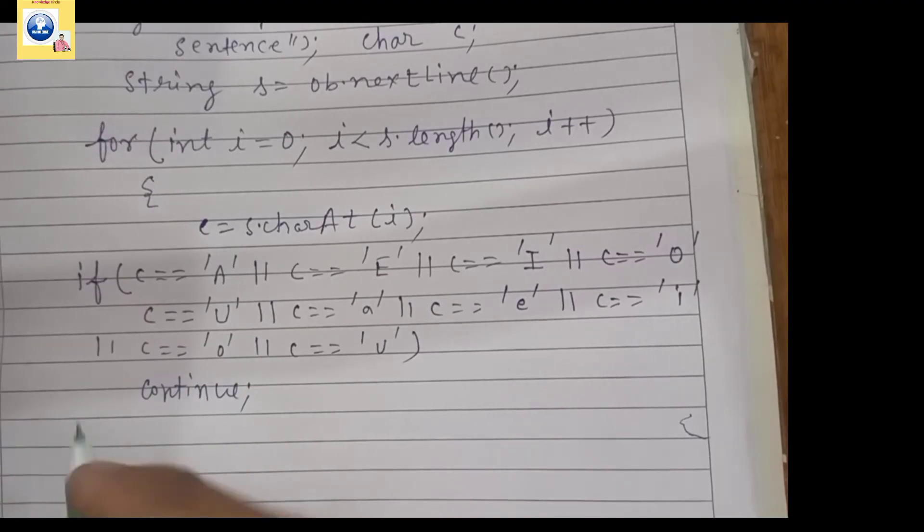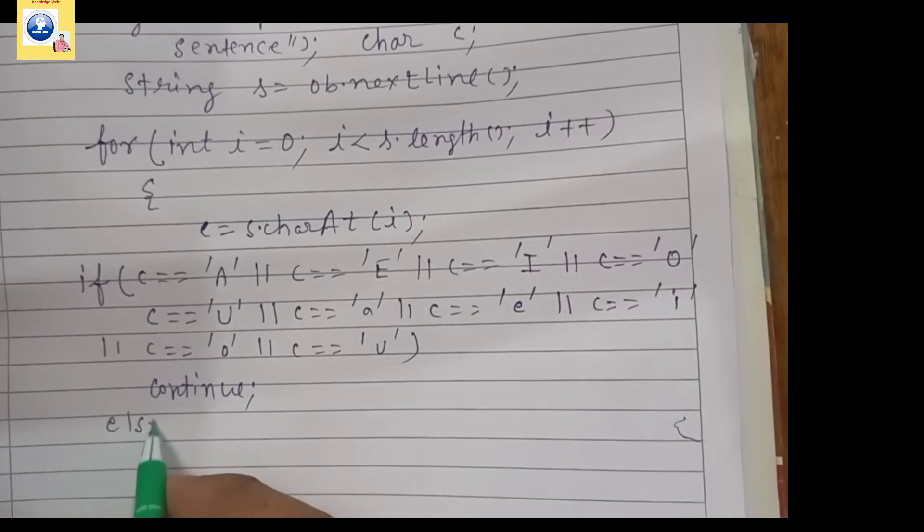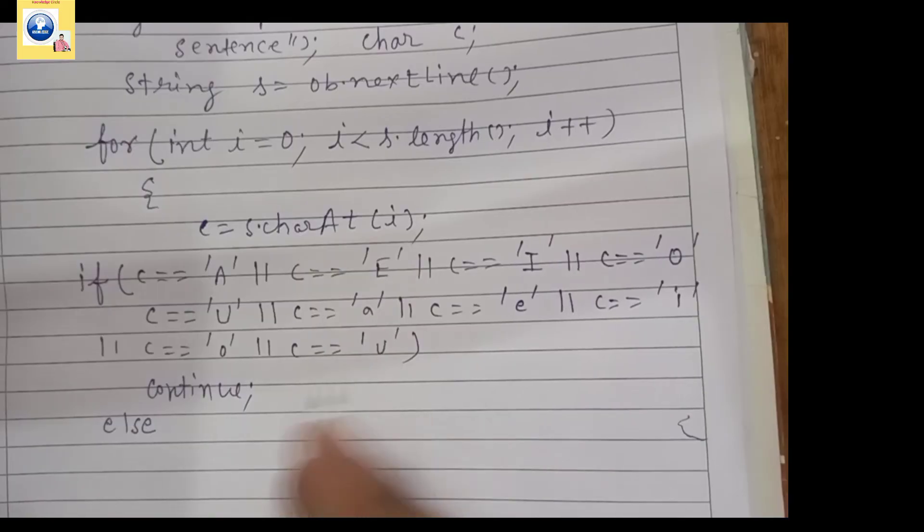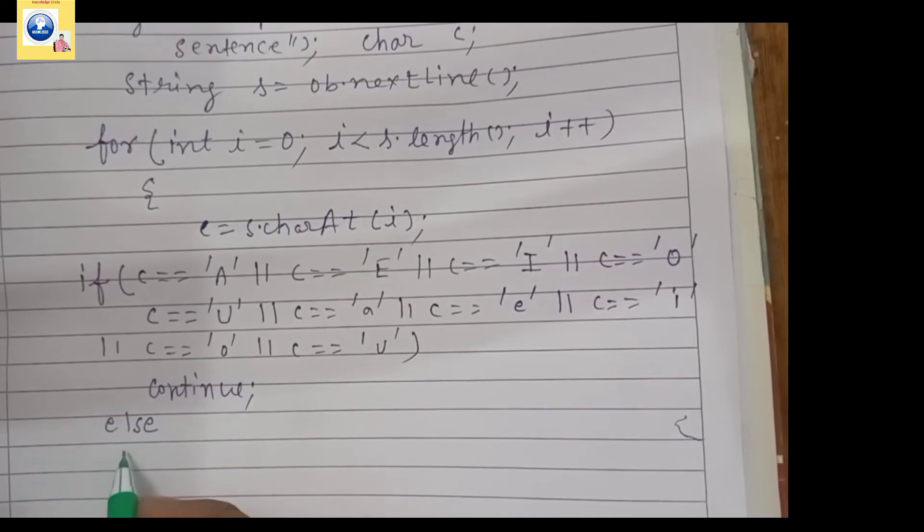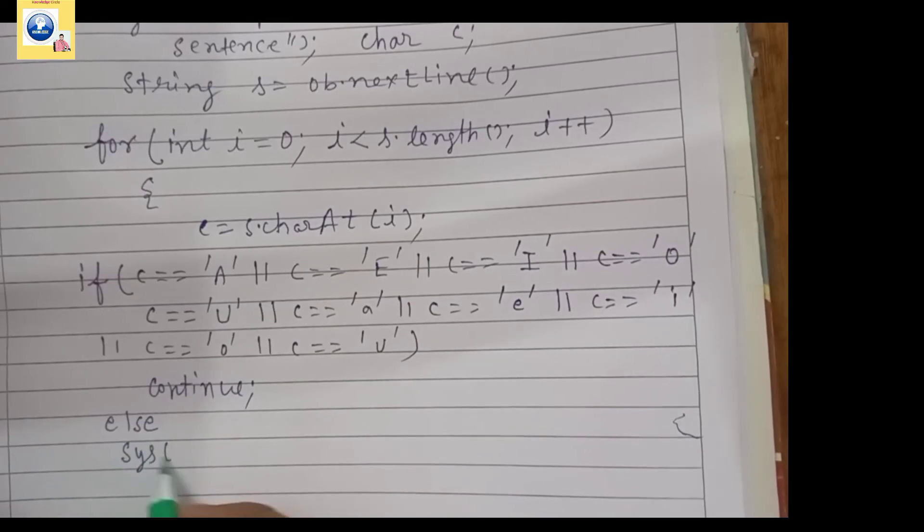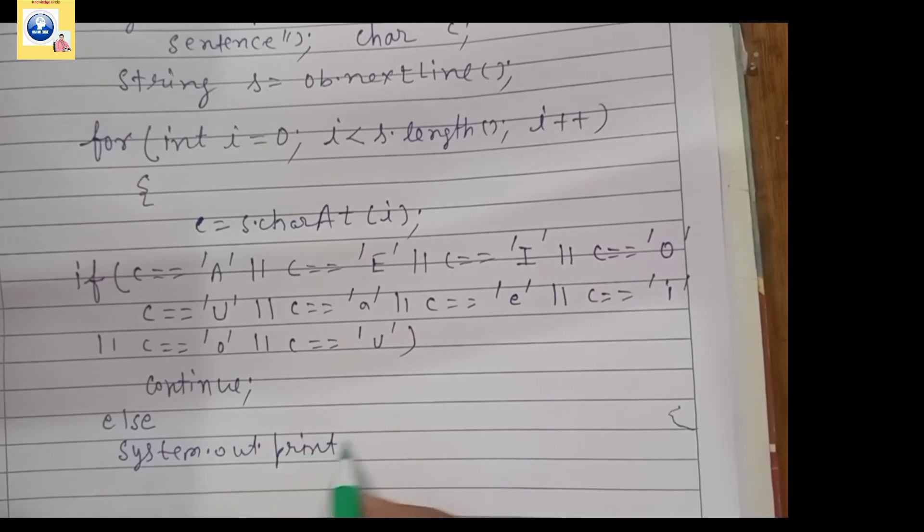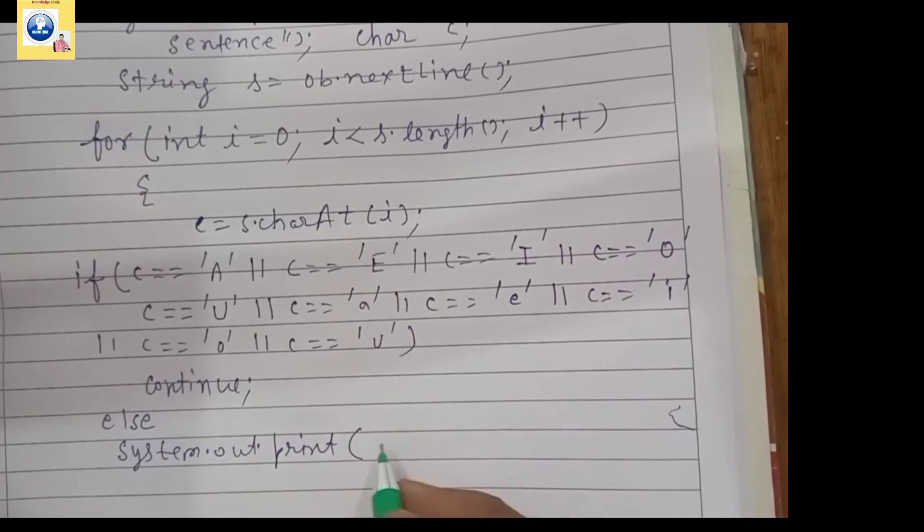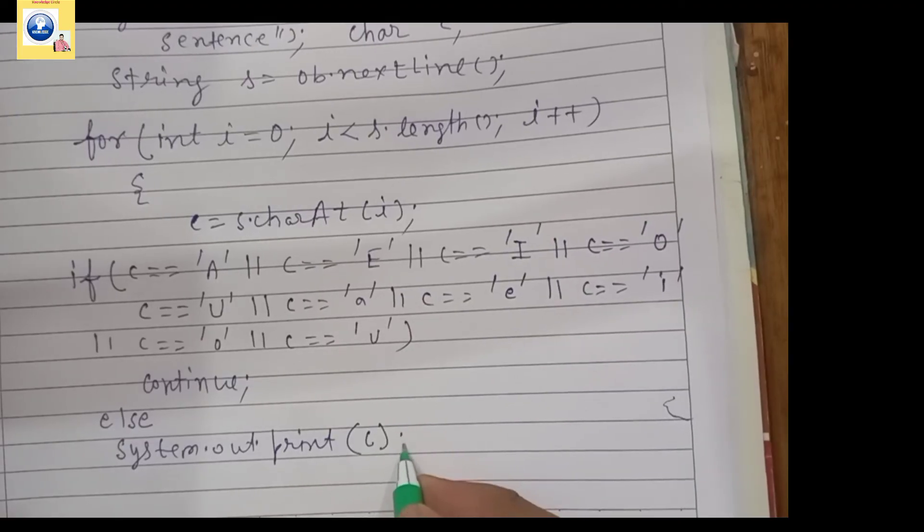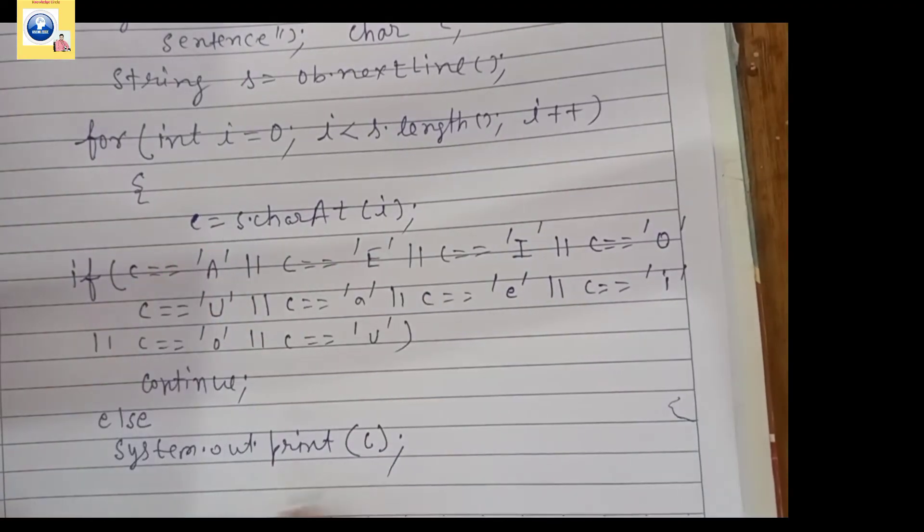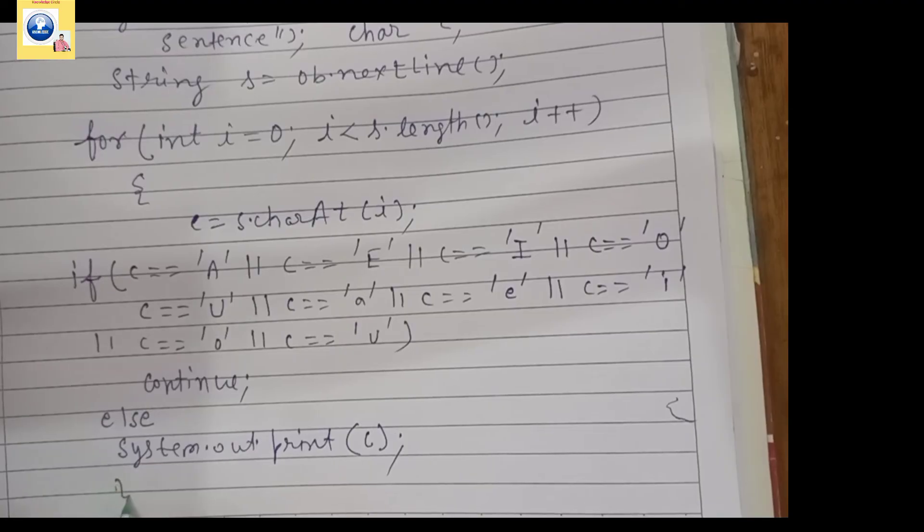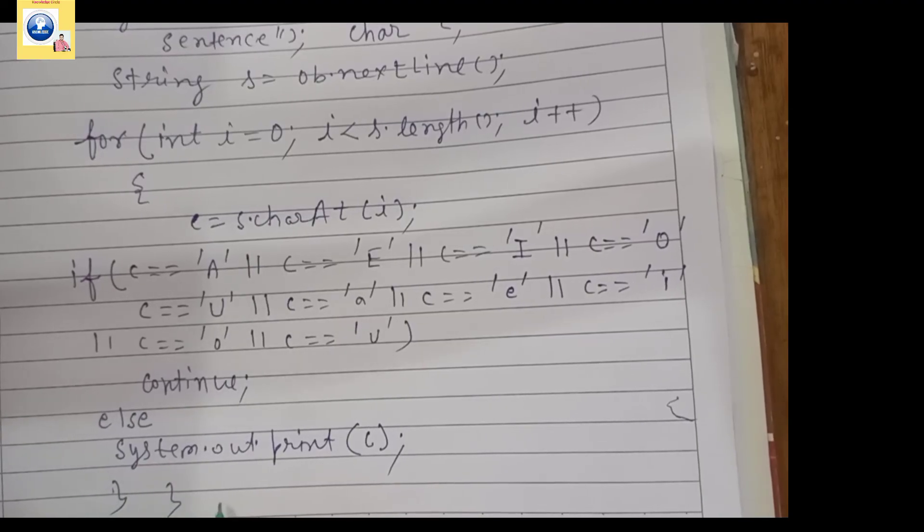If it is true then continue. If it is not true then print it. So else, if it is not vowel, if it is a consonant, then you can simply write System.out.print and what to be printed? c to be printed, the character at a specific position which is stored in c. That will be printed. And then close the loop and close the main function and the class.